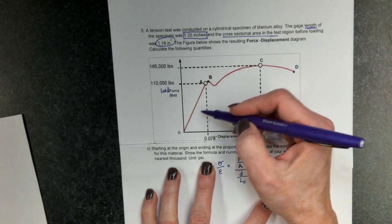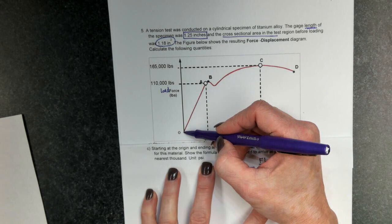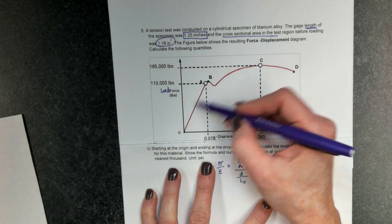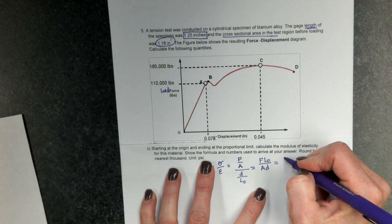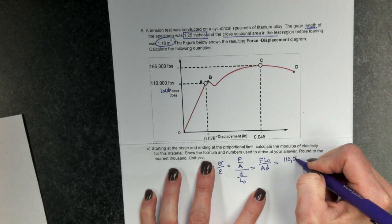So, the force, again, at my original proportional limit is zero, so I only have to consider the points here at the end at my proportional limit. The force is 110,000.